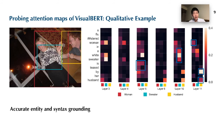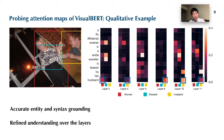Here we showcase another example. We find that the model is pretty accurate at grounding — mapping women, a white sweater, his teeth, and husband to the correct regions. Further, the model is refining its understanding over the layers. At layer 3, it mistakenly maps the word husband to the region of women. However, it gradually shifts its attention weights to the regions of the men through layers 4 to 11. This observation aligns with our conclusion from the quantitative analysis.